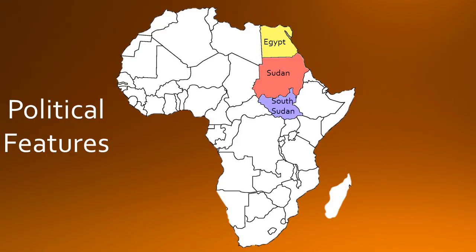Now we have South Sudan. It is located south of Egypt and Sudan. Its capital is Juba and it borders the Democratic Republic of the Congo and Kenya.